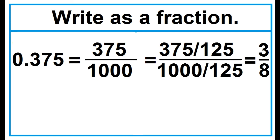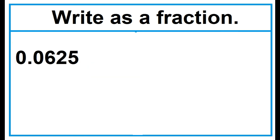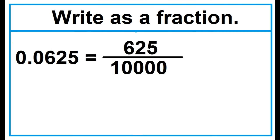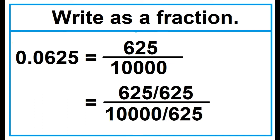Another example: write as a fraction, 0.0625. This is read as 625 over 10,000. Write 625 as the numerator and 10,000 as the denominator. The common factor is 625. Divide 625 by 625 and 10,000 by 625. 625 divided by 625 is 1, and 10,000 divided by 625 is 16. So 0.0625 is equal to 1 over 16.